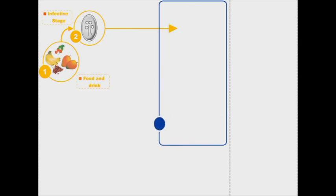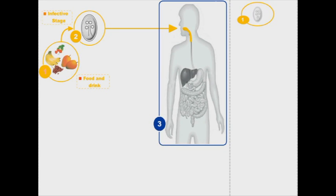The life cycle of Giardia is relatively simple. Food and water contaminated with Giardia cysts are ingested by a human. In the small intestine, the four-nucleate cysts undergo excestation to release the binucleated trophozoites.